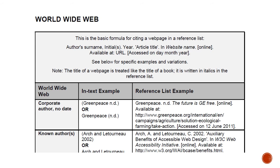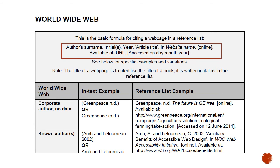The final source we will tackle in this video is referencing a web page. For a web page, turn to page 32 of the referencing techniques booklet. Again, you can find the formula at the top of the section. You'll notice we need a lot of the same information — the author's surname, initials, year, and the title of the article. Some new pieces of information we also need include the title of the web page, the URL, and the date that you accessed this web page.